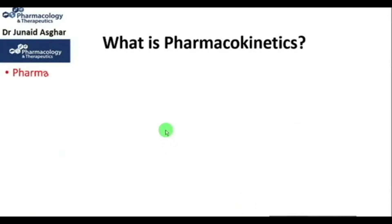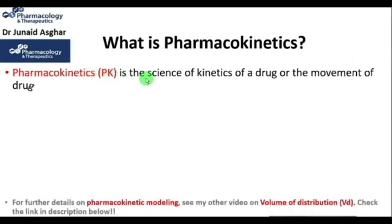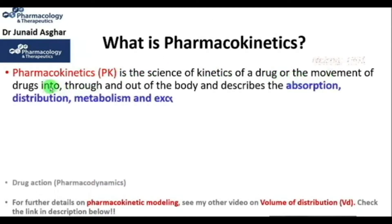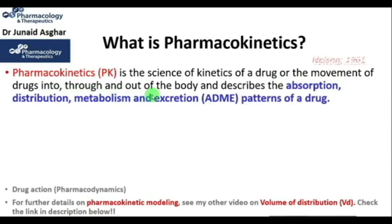What is pharmacokinetics? Pharmacokinetics, or PK, is the science of kinetics of a drug — the movement of drugs into, through, and out of the body — and describes the absorption, distribution, metabolism, and excretion, or ADME, patterns of a drug. These four terms, ADME, were first presented together in English by Nelson in 1961.